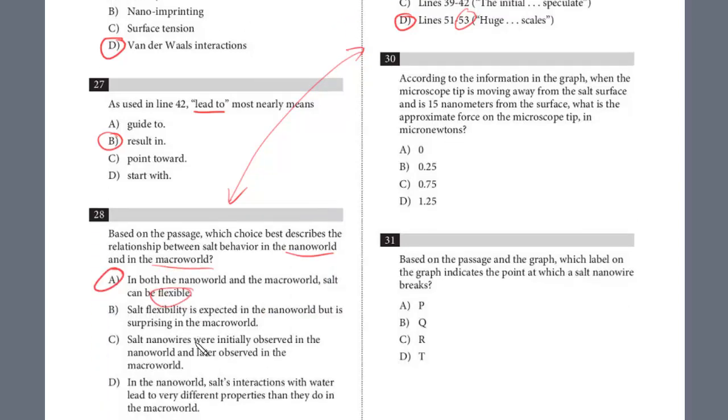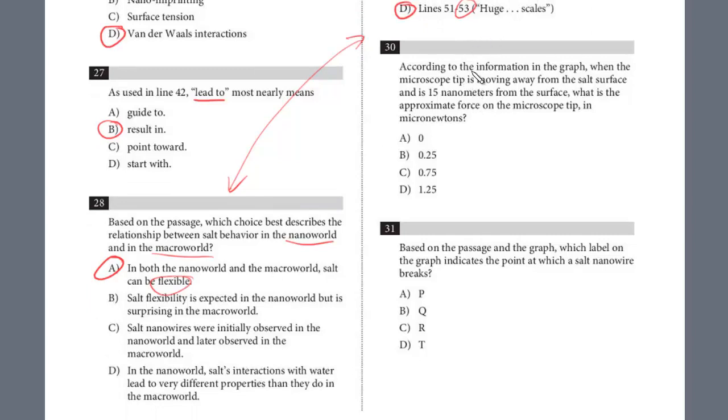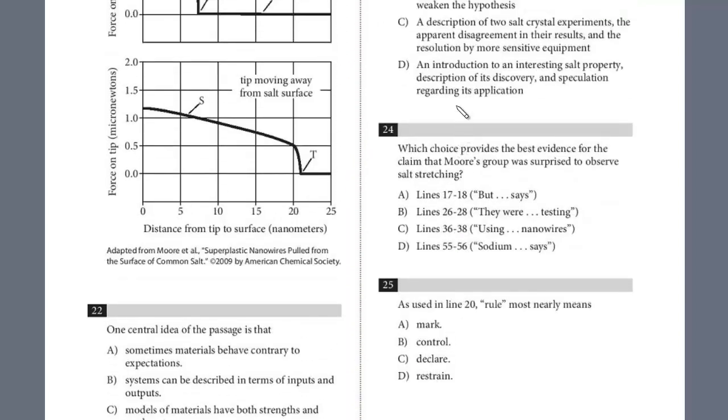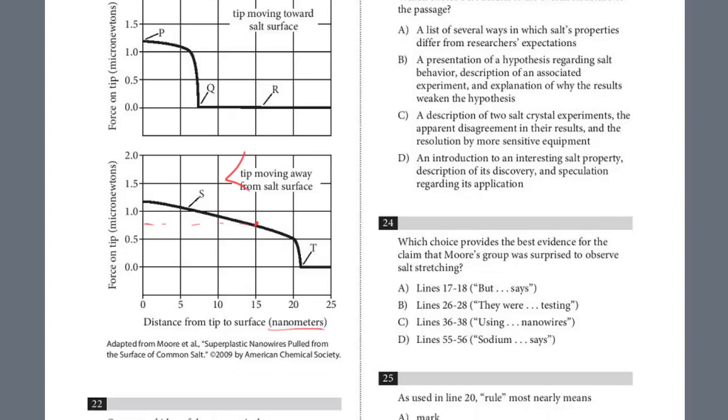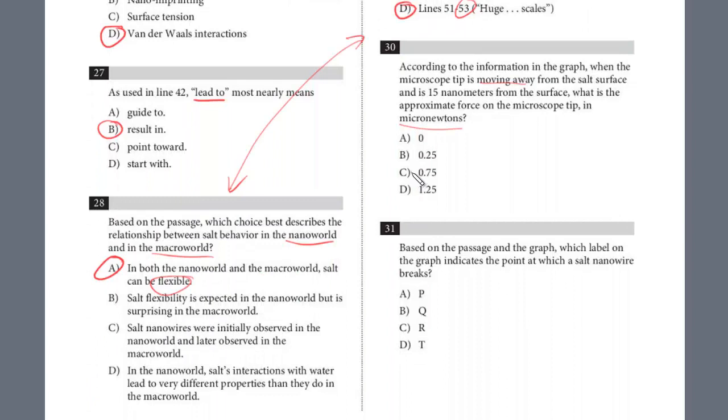Question 30: According to the information in the graph, when the microscope tip is moving away from the salt surface and is 15 nanometers from the surface, what is the approximate force on the microscope tip in micronewtons? Let's take a look at the graph. Moving away is definitely this bottom graph, and 15 nanometers—we want to find out the micronewtons. We have to estimate what value is this right here. This is 0.5, we know in the middle it would be about 0.75 because this is 1. Let's see if we have 0.75 as an answer, and we do exactly that. The answer is C.